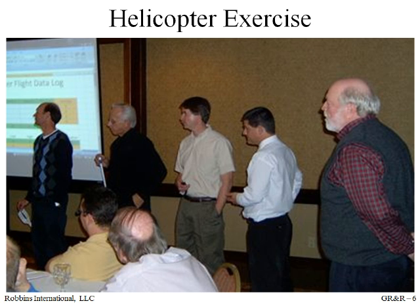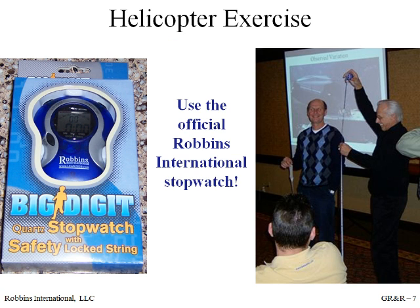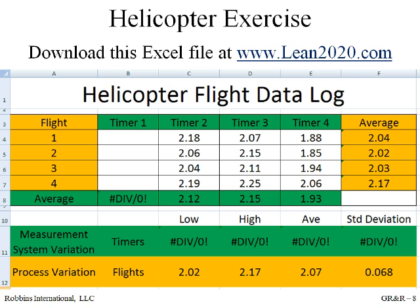We will now ask you to take part in an experiment conducted throughout the world. This is not an actual Gauge R&R, although it will provide you with a basic understanding of the components of variation. You'll need a stopwatch — perhaps your digital watch has this feature. Green belts who have attended our program receive stopwatches along with other class materials. We've provided a file on our website, www.lean2020.com, for your use. Once you've downloaded the file, you will need to watch the helicopter drop video and enter your times for each of the four flights as timer 1.